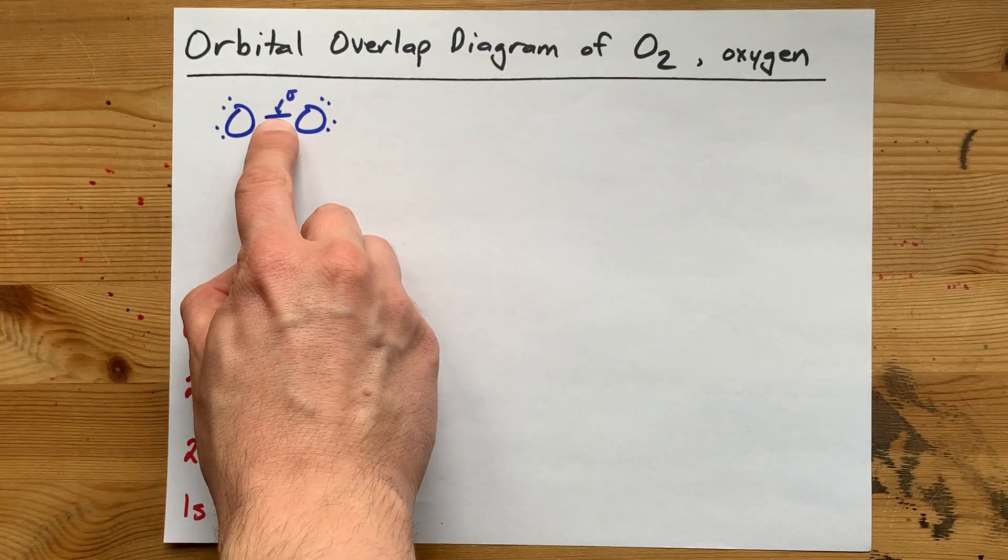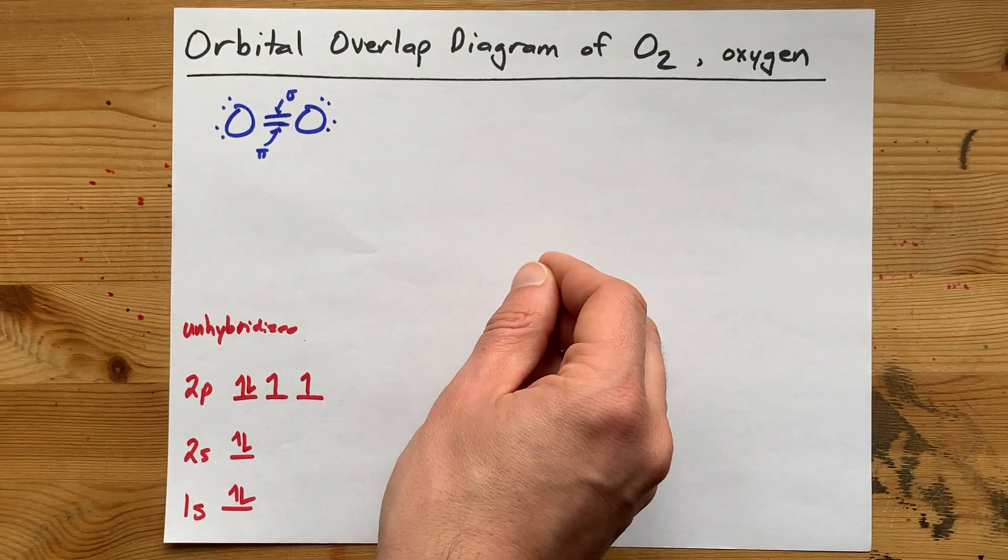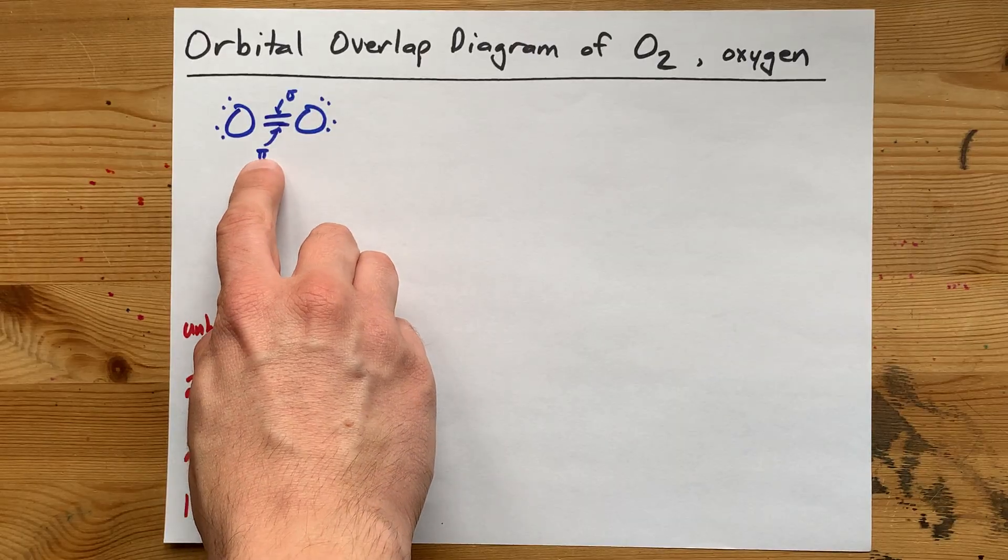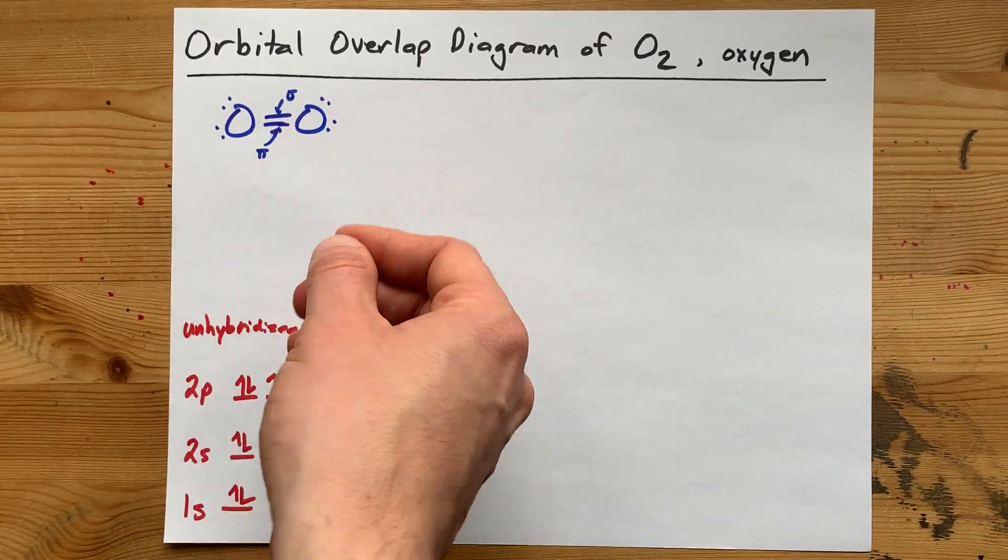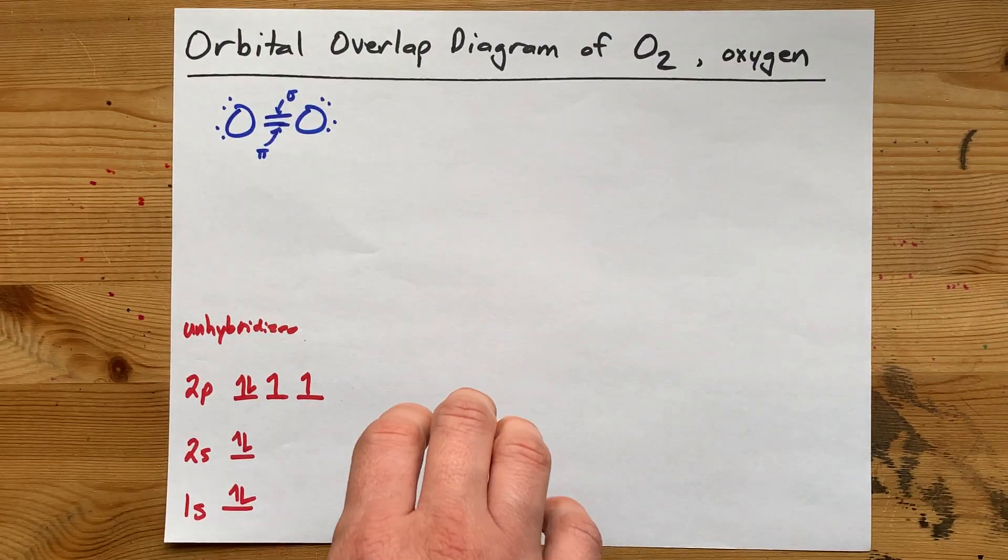That means there is a sigma bond, which is the first bond between any two atoms, and a pi bond, which is the second or third bond between any two atoms.